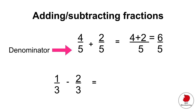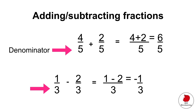Let's do a subtraction problem. Again, first thing we're going to do is look at the denominator — same denominators, easy. All we have to do is subtract the top numbers: 1 minus 2 equals negative 1, and the bottom number, the denominator, stays the same — it's going to be 3. That's all you have to know about adding and subtracting fractions with the same denominator.